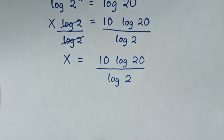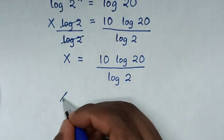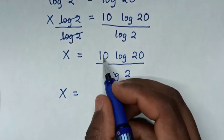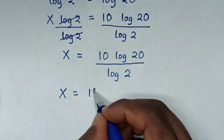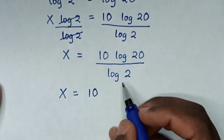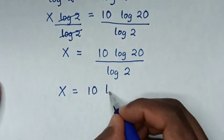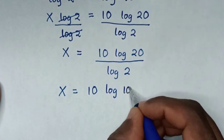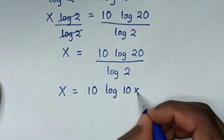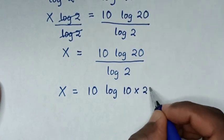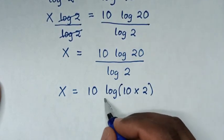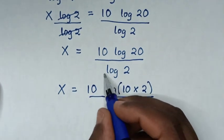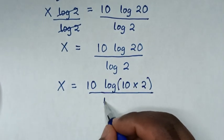Then in the next step it will be x is equal to 10, then times log of 20, the same as log of 10 times 2, then in brackets over log of 2.